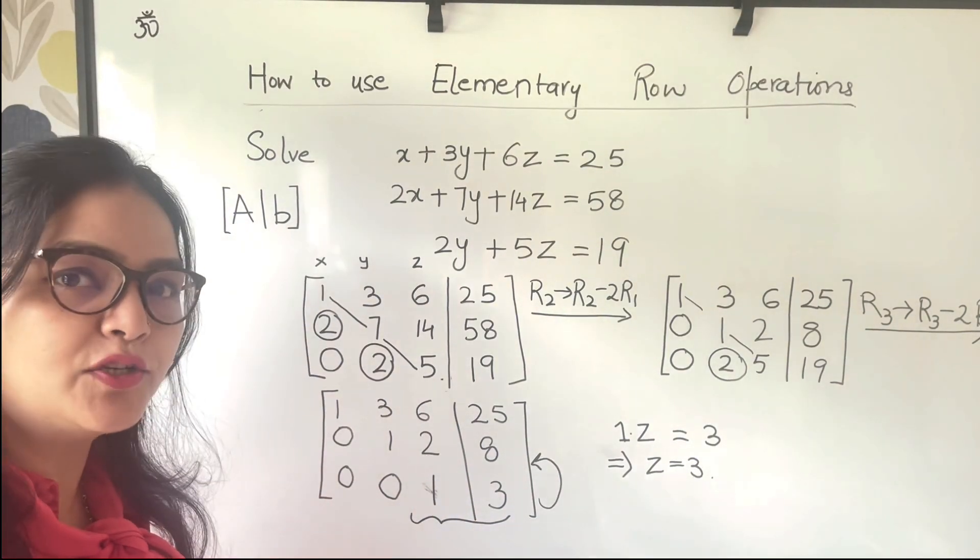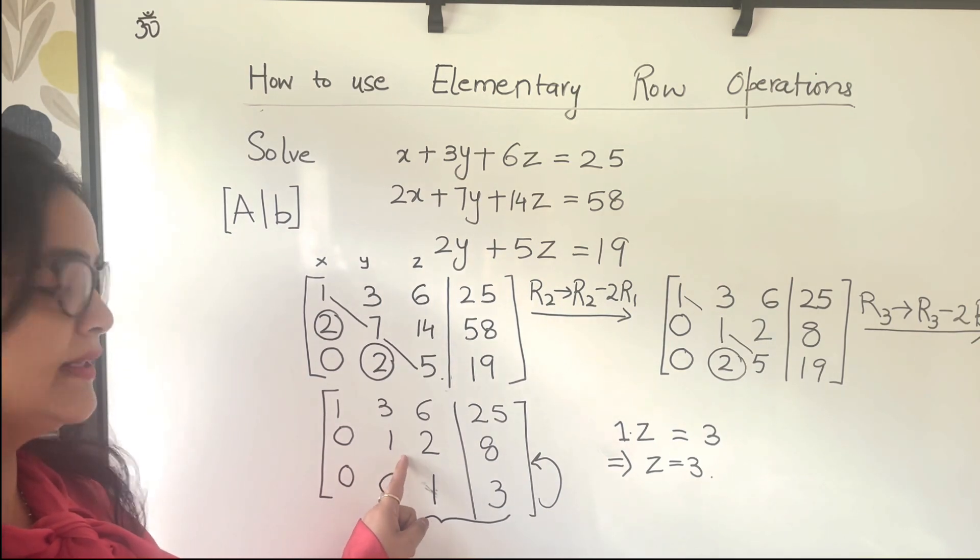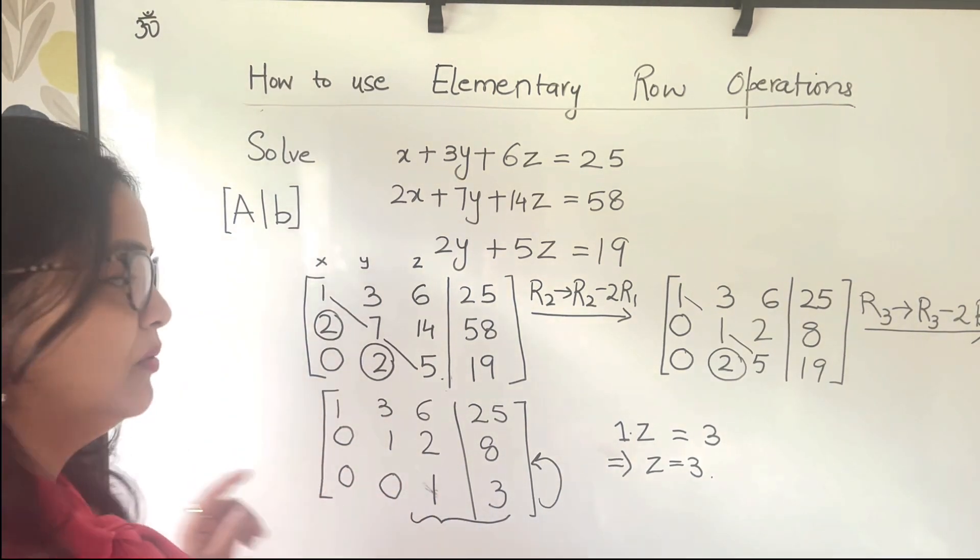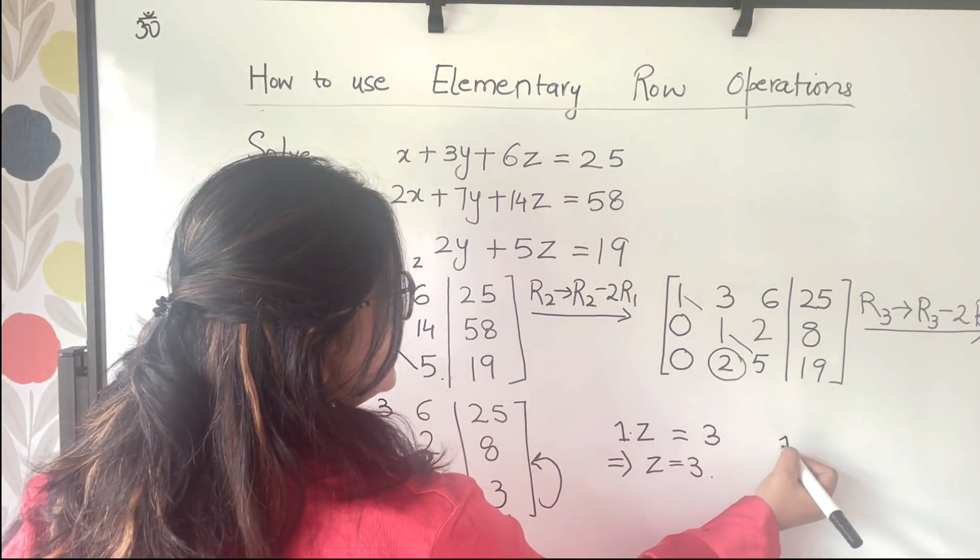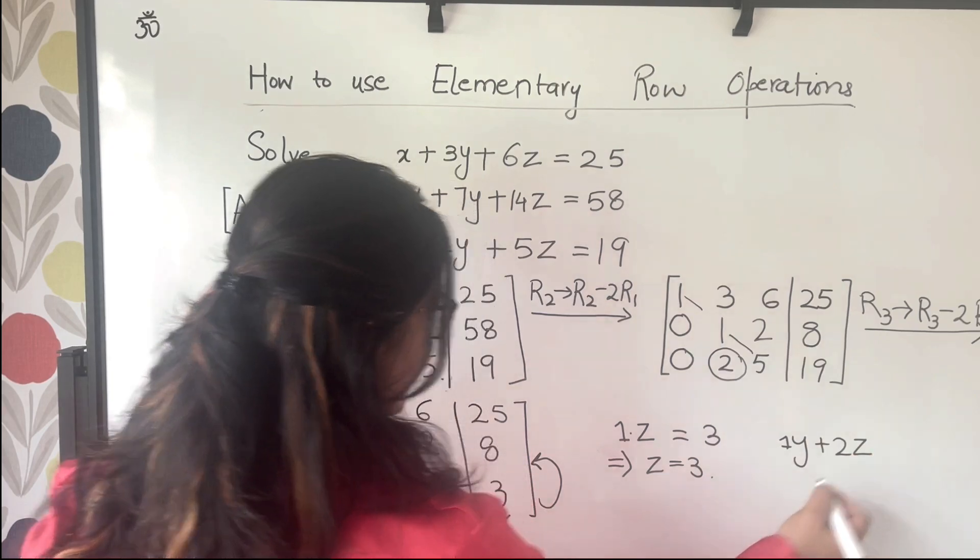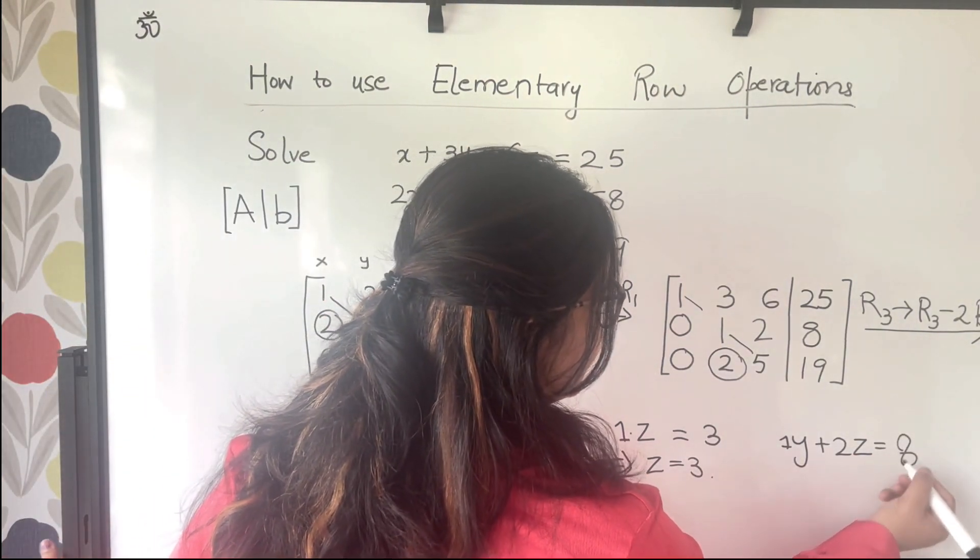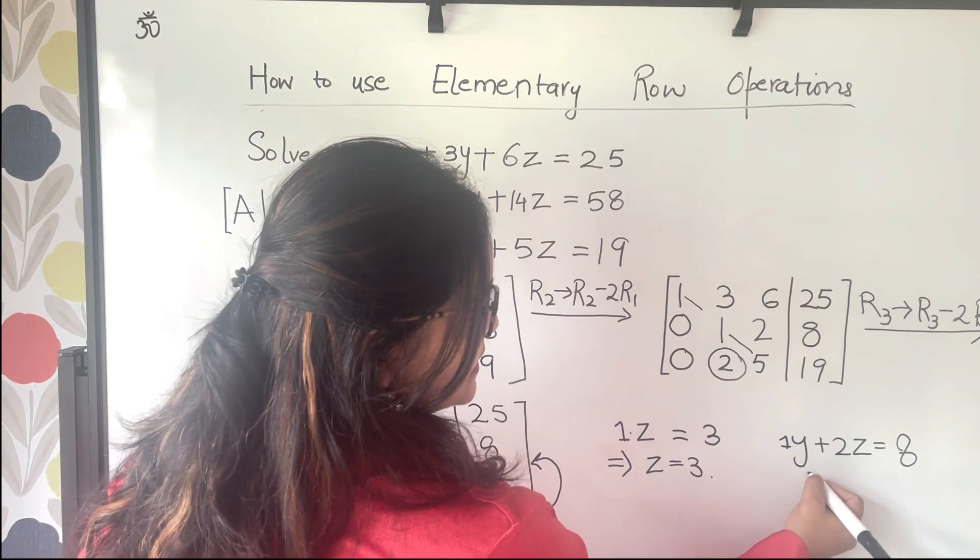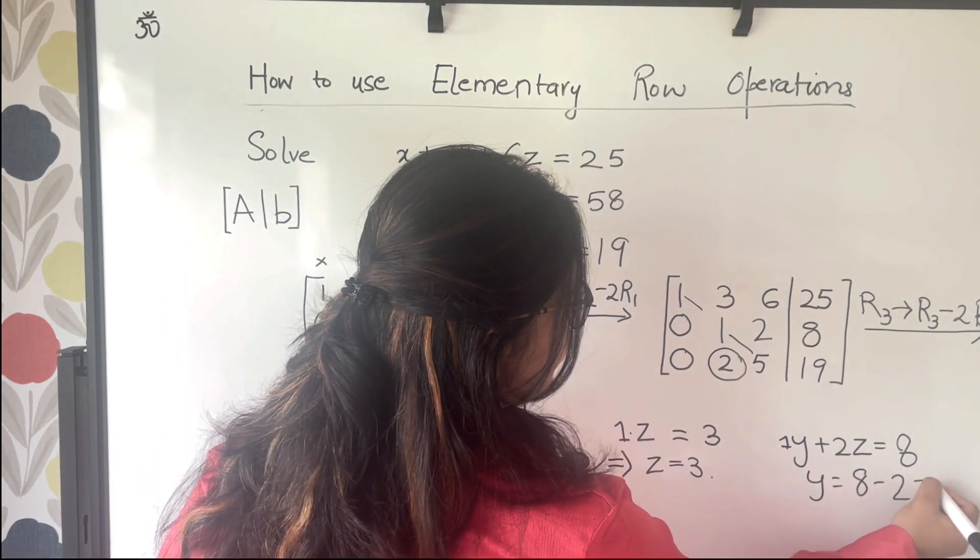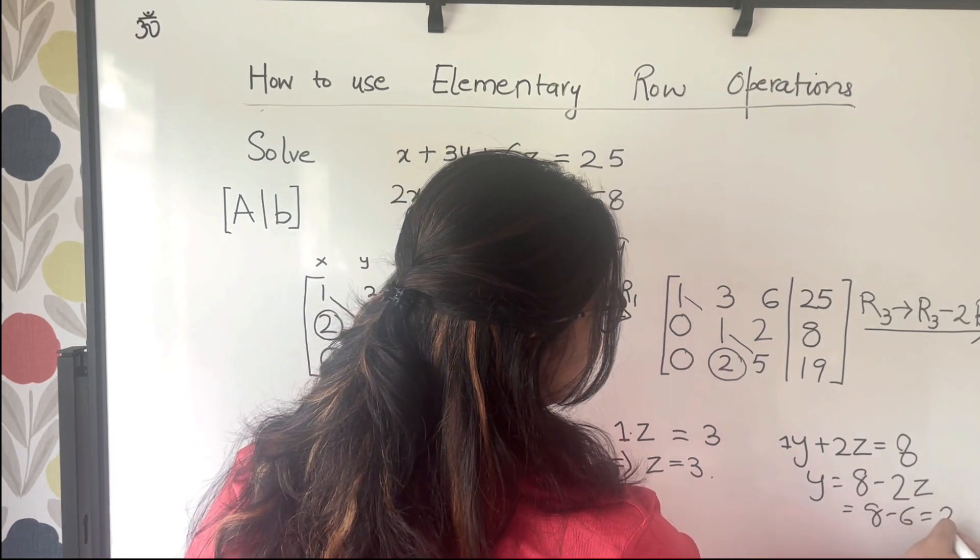Now with the help of z, what I can do is I can find out y. If I go back to the second row, I get 1 times y plus 2 times z is equal to 8. And that means y is equal to 8 minus 2z, which is 8 minus 6, that is 2.